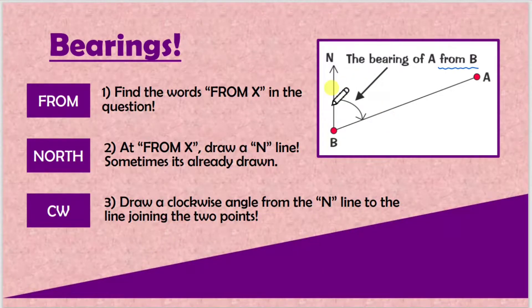Finally, CW is clockwise. You want to draw a clockwise angle from the north line to the line joining the two points. So from here all the way to here - that's your north line, you just draw an angle over there. That's pretty much all you do, guys. This is literally how you calculate bearings. Quick recap: always find the word FROM, whatever letter it is, then go straight to the question.